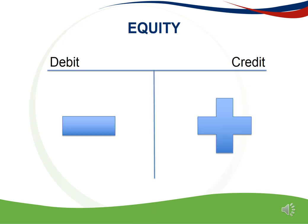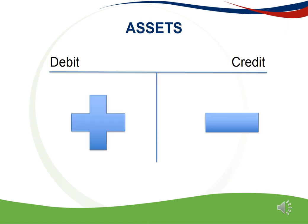The rule for equity is that it increases on the credit side and decreases on the debit side. This means that in our example, we will credit capital since it forms part of equity. The rule for assets is that they increase on the debit side and decrease on the credit side. In our example, we will therefore debit the bank account with 100,000 Rand.